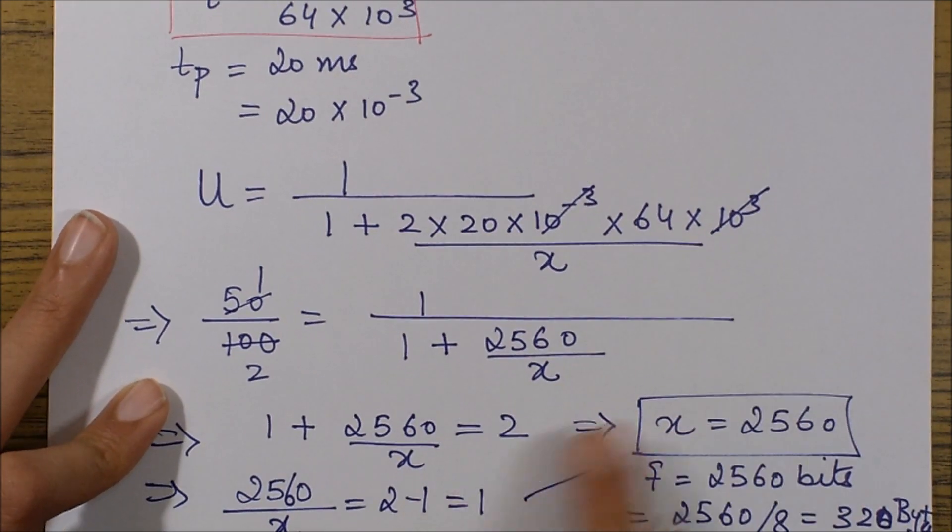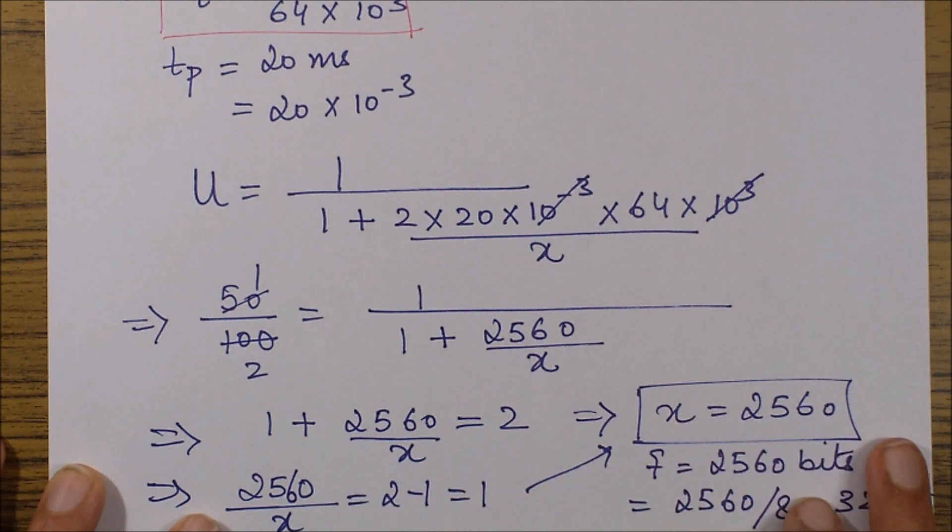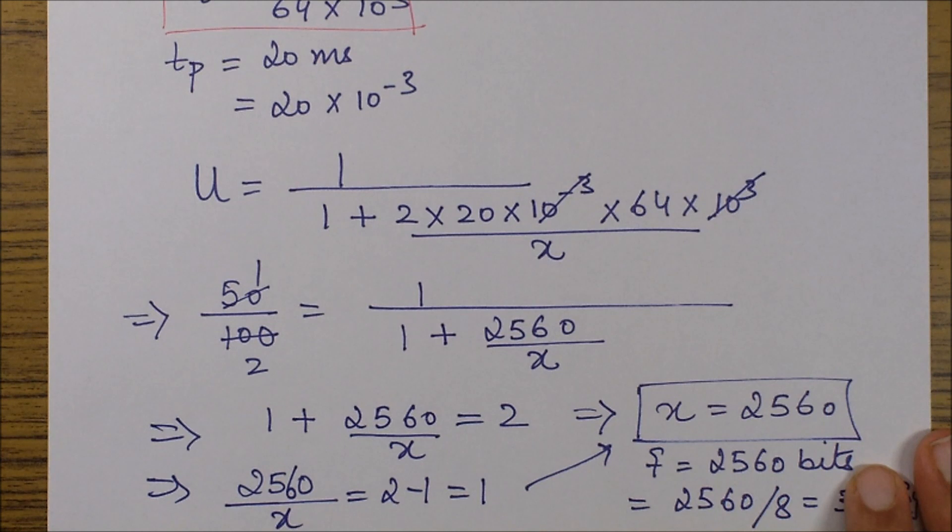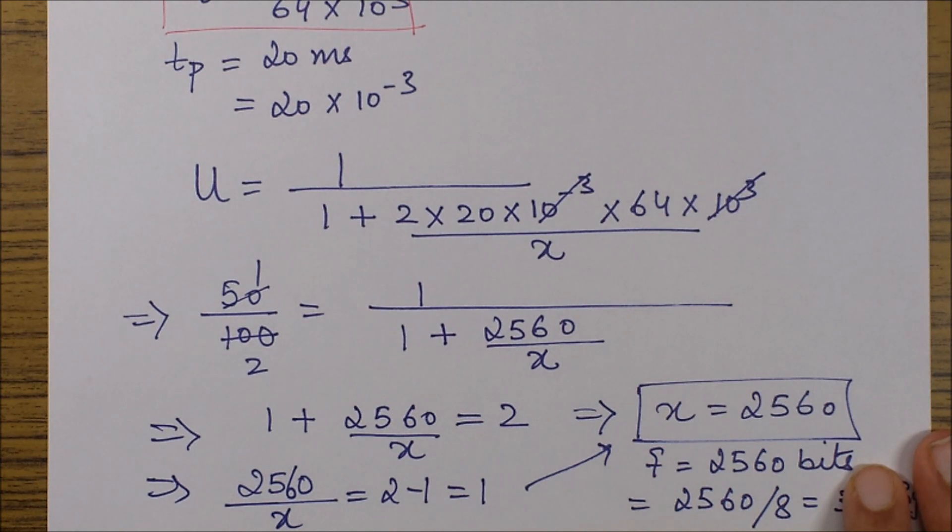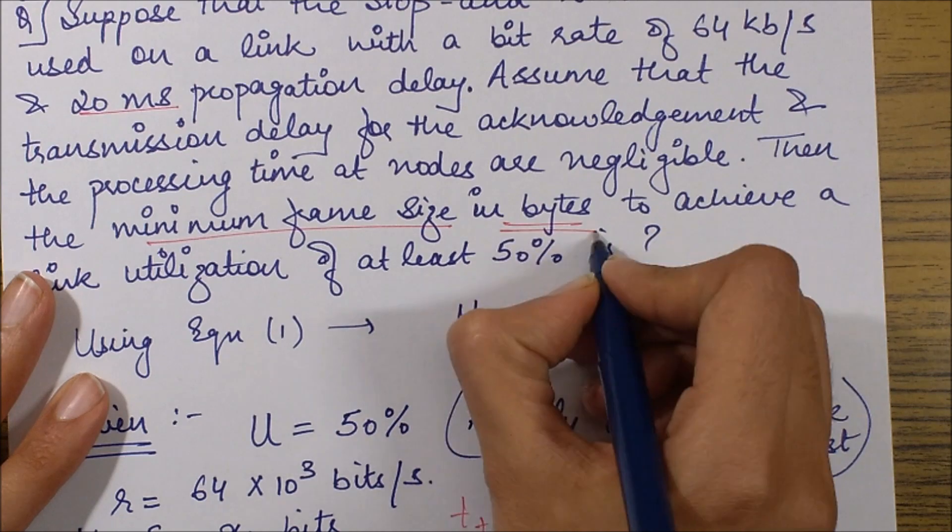On simplifying, we get the value of x as 2560. But always remember, before entering the final answer, read the question once again, at least its last line, to see what it has asked and in which form.